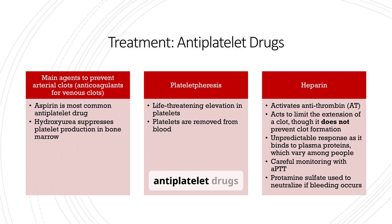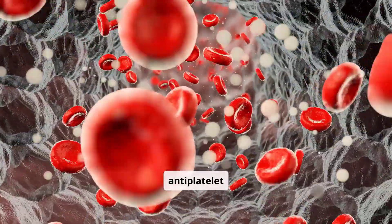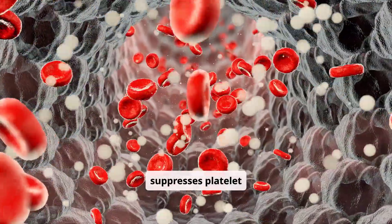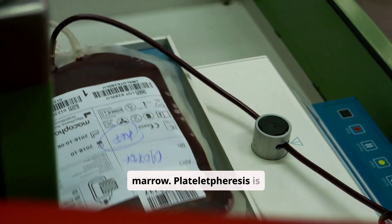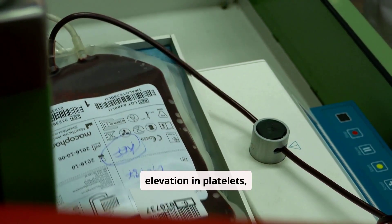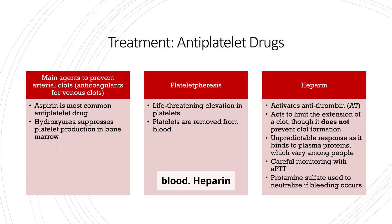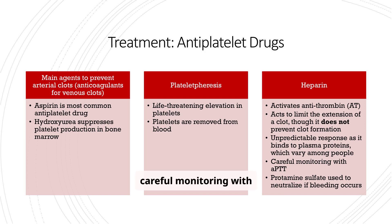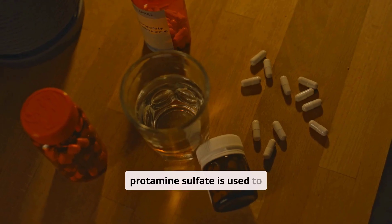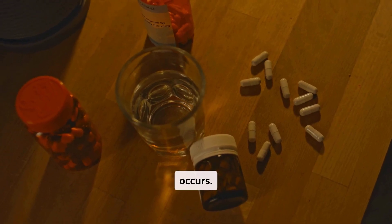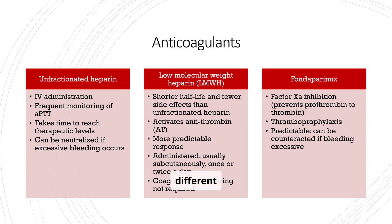Treatment with antiplatelet drugs is crucial for preventing arterial clots, while anticoagulants are used for venous clots. Aspirin is the most common antiplatelet drug, and hydroxyurea suppresses platelet production in bone marrow. Platelet pheresis is used for life-threatening elevation in platelets, removing platelets from the blood. Heparin activates antithrombin, limiting clot extension, but requires careful monitoring with APTT, and protamine sulfate is used to neutralize it if bleeding occurs. This slide compares different anticoagulants: unfractionated heparin, low molecular weight heparin (LMWH), and fondaparinux.